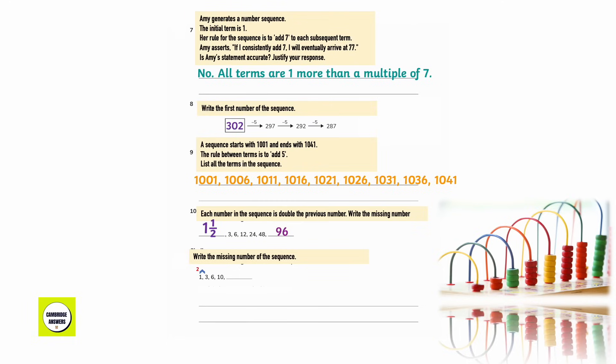Write the missing number in this sequence. The difference between 3 and 1 is 2, the difference between 6 and 3 is 3, and the difference between 10 and 6 is 4. So the next number would be 15 because the difference between 15 and 10 is 5. Explain how you worked it out: add 5 to the previous term.